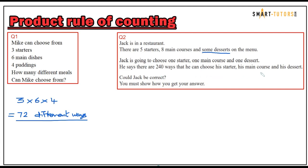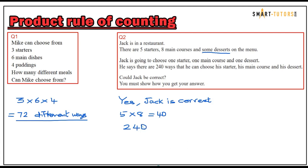Could Jack be correct? Yes, Jack is correct. If you multiply the number of starters by the number of main dishes — five times eight — that gives 40 options. If you divide Jack's answer of 240 by 40, that gives a clear integer answer of six. So there may be six desserts in the restaurant.